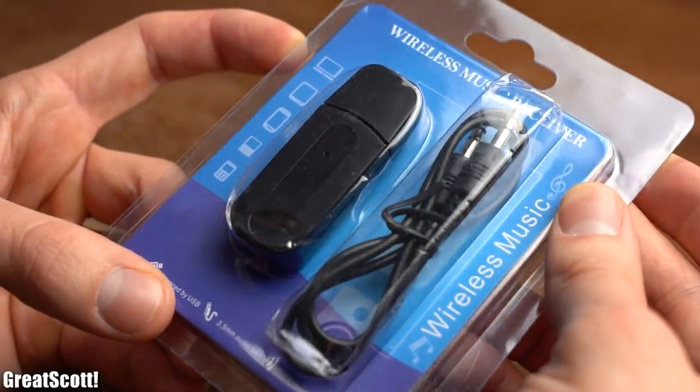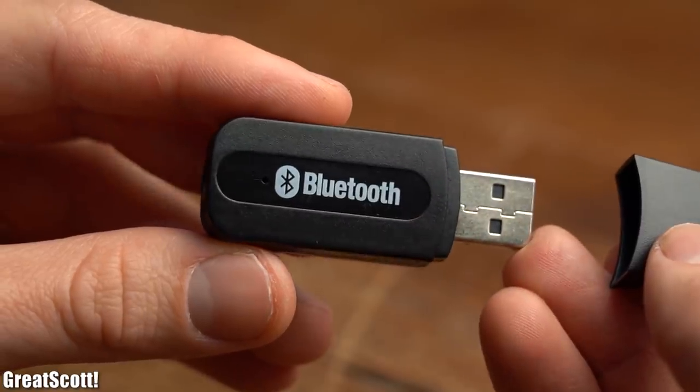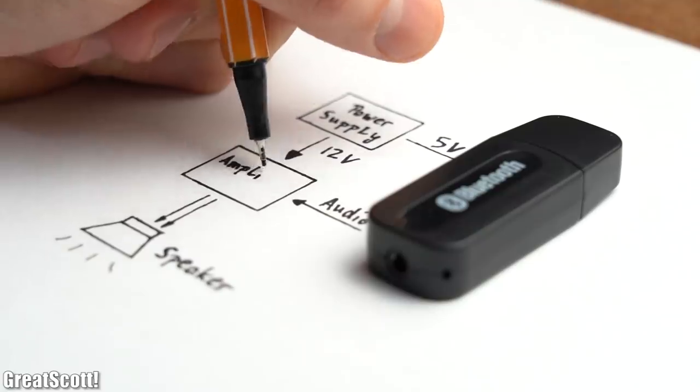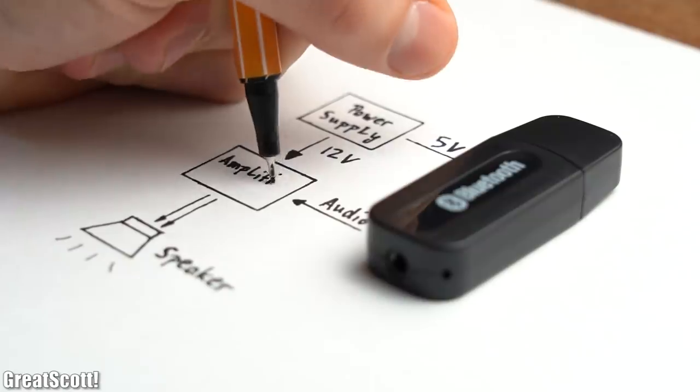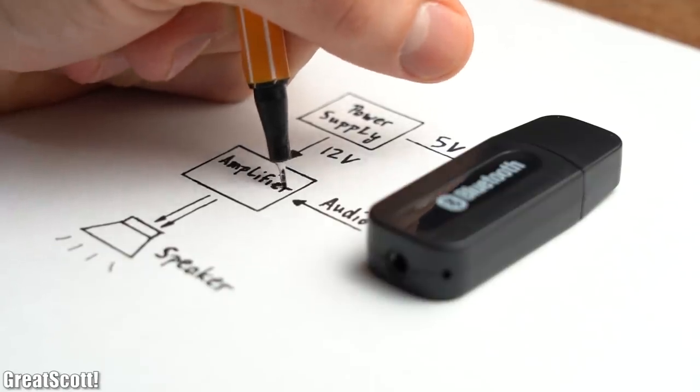Let's say you just got yourself a cheap Bluetooth music receiver from eBay and now you want to create a music system with it by adding a power supply, amplifier and speaker.